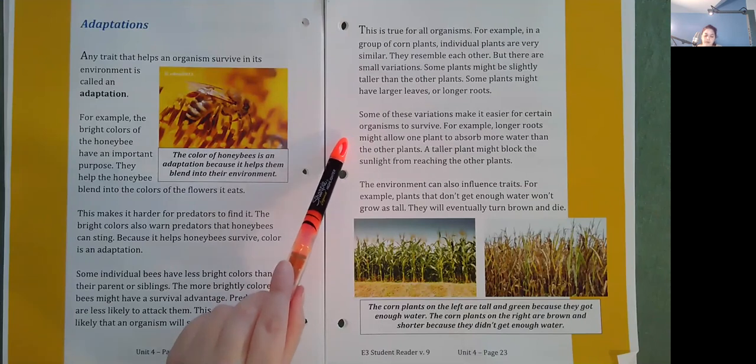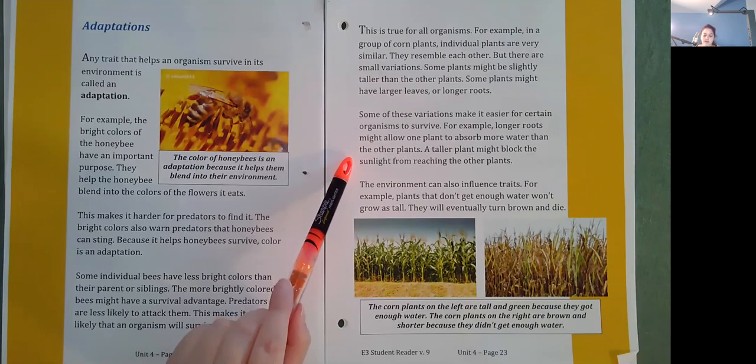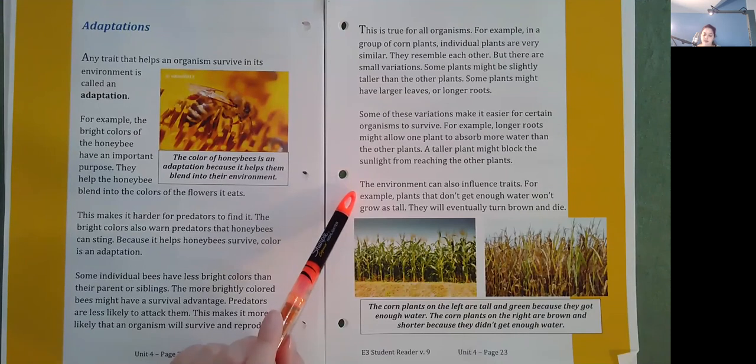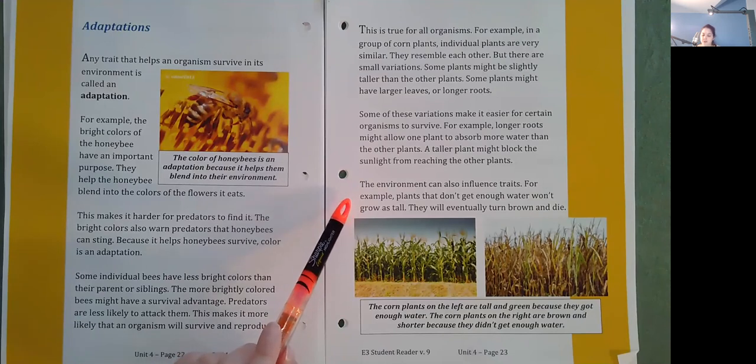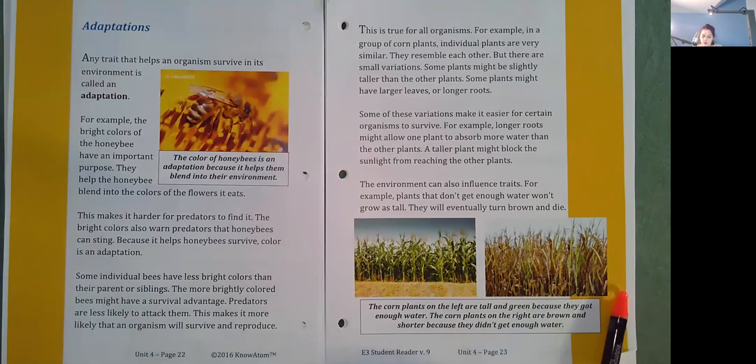For example, longer roots might allow one plant to absorb more water than the other plants. A taller plant might block the sunlight from reaching the other plants. The environment can also influence traits. For example, plants that don't get enough water won't grow as tall. They will eventually turn brown and die. So the corn plants on the left are tall and green because they got enough water. The corn plants on the right are brown and shorter because they didn't get enough water.